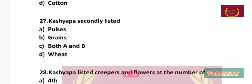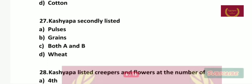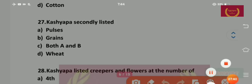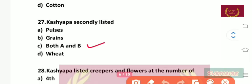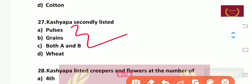Question number 27: Kashyap secondly listed — pulses, grains, both A and B, or wheat? The right answer is both A and B. Both pulses and grains are correct.